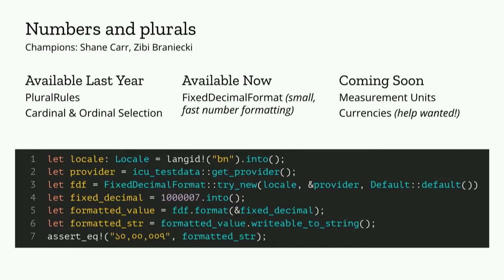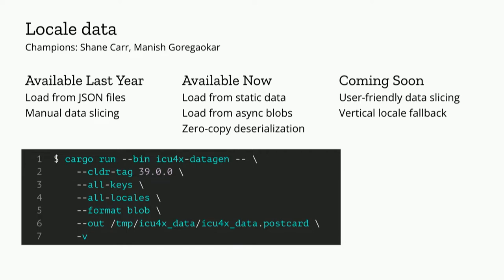The second category is numbers and plurals. Last year, you could already do plural rules and cardinal and ordinal selection. A big thing that's changed since last year is fixed decimal format — we now support number formatting. Coming soon are measurement units and currencies. Next is locale data — that's definitely my wheelhouse. Previously we only supported loading from JSON files, but now we support loading from static data blobs. We support zero-copy deserialization, which means you don't have to allocate any memory at all to use ICU4X, which is super exciting. We also support loading async data.